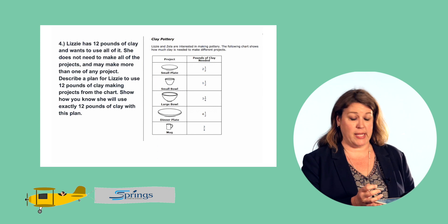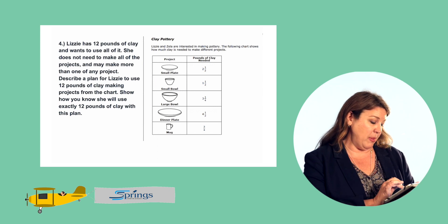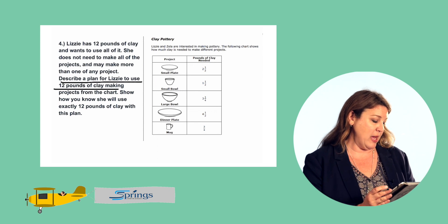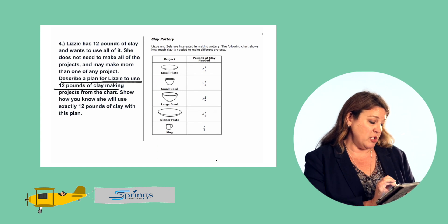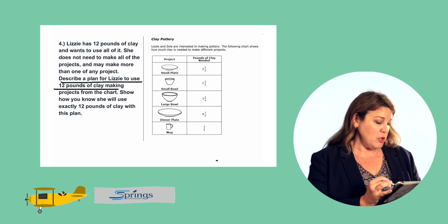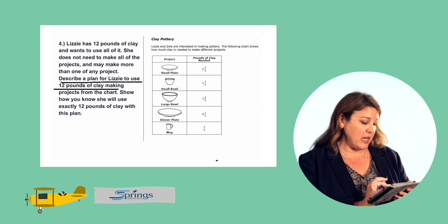Okay, so we have lots of choices here. We need to describe a plan for Lizzy to use exactly 12 pounds of clay. She does not need to make all the projects. She can make more than any one of the projects. So let's take a look at our chart. We know that she needs to use exactly 12 pounds.